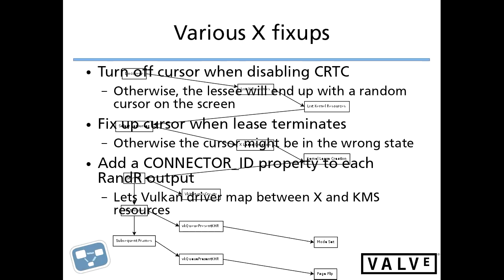There are a bunch of X fix-ups that were needed. One is cursor management: there's a separate cursor on the screen, and I have to make sure the cursor is displayed when you're running X and not displayed when the lease starts, because it's managed separately in the kernel APIs. When I do a mode set, the cursor may or may not reappear — it's separately configured. So the X server has to do bunch of management to ensure the cursor appears at the right times. The other thing I did was let applications know the mapping between X resources and kernel resources, so when an application finally gets its lease and can talk to the kernel, it knows which resource IDs correspond to what X was talking about.